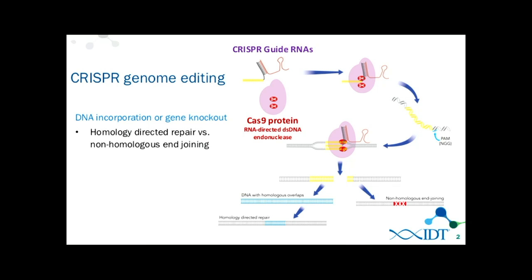The other pathway is homology-directed repair, which requires a third component — a donor template that would have a gene you want to incorporate or a correction you're trying to induce, with homology-directed arms that you are inserting into that double-stranded break. Today I'm just going to focus on the non-homologous end joining pathway, but if you have any questions specifically on homology-directed repair I'd be happy to discuss that later.